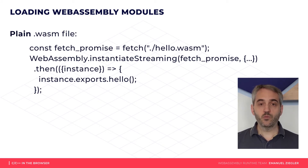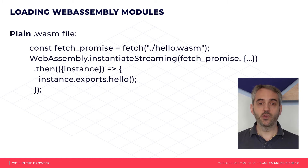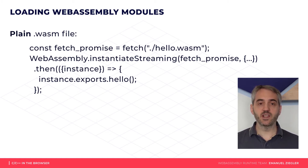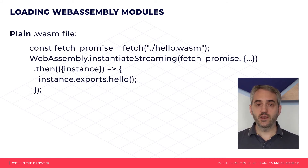Bare WASM modules do not offer the same level of comfort as Emscripten modules which were compiled with JavaScript output too. For now, WebAssembly only supports elementary data types and complex parameters like strings are hard to transform. I therefore recommend also creating a JavaScript module in Emscripten as shown earlier.